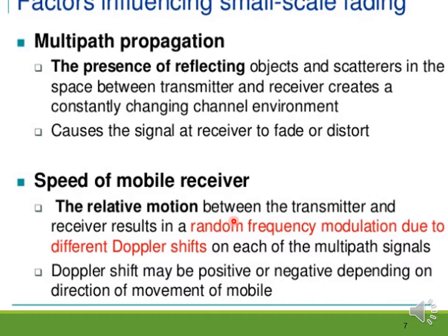In this presentation we mainly concentrate on small-scale fading. The main factors influencing small-scale fading are: first, multipath propagation — the presence of reflecting objects and scatterers between transmitter and receiver creates a constantly changing channel environment causing the signal to fade or distort; second, speed of the mobile — relative motion between transmitter and receiver results in random frequency modulation due to different Doppler shifts on each of the multipath signals. Doppler shift may be positive or negative depending on the direction of movement of the mobile.